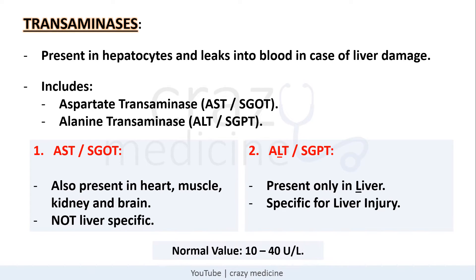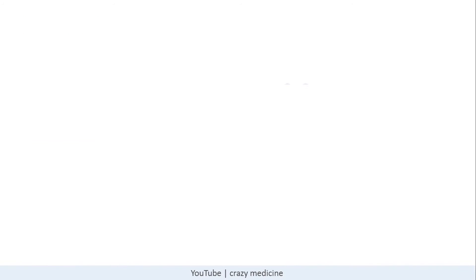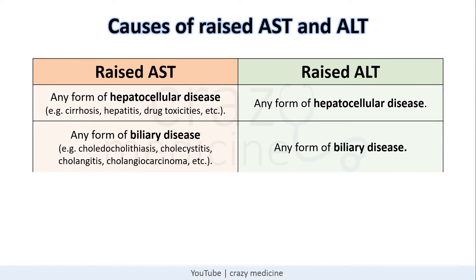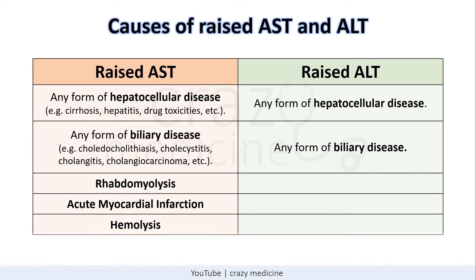Causes of raised AST and ALT: any form of hepatocellular or biliary disease may cause a rise in both. However, a rise in AST can also be seen in rhabdomyolysis, acute myocardial infarction, and hemolysis, because AST is also expressed in heart, muscles, kidney, and brain. ALT is specific to the liver and is increased only in hepatocellular and biliary disease.